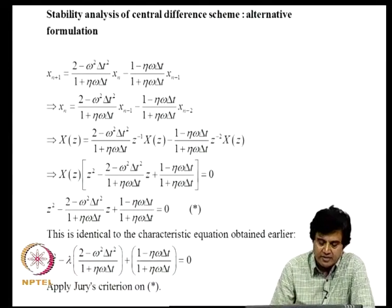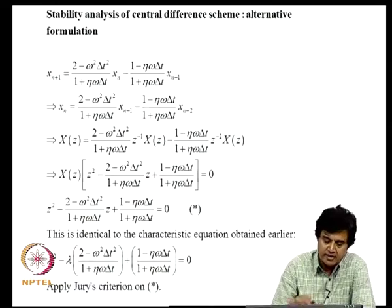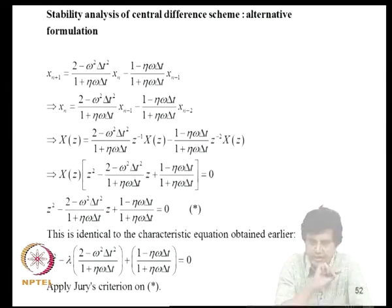To conclude: in the next class we will ask whether there exist second-order implicit schemes that are unconditionally stable. This leads to the discussion of the Newmark family of methods, which we will take up in the next lecture.